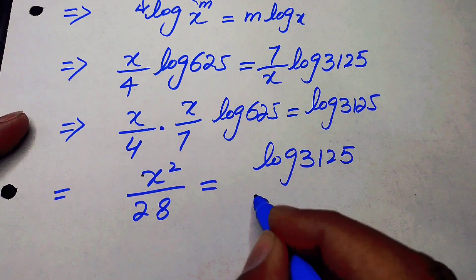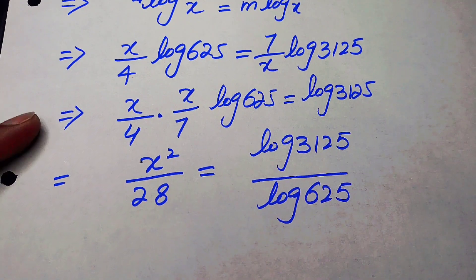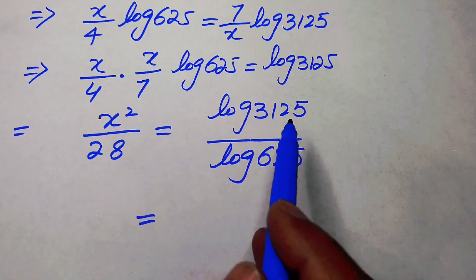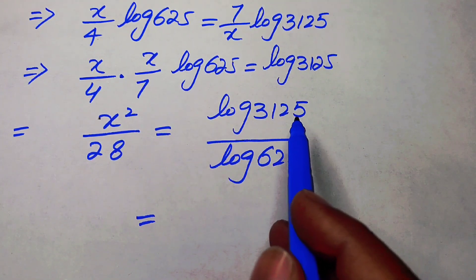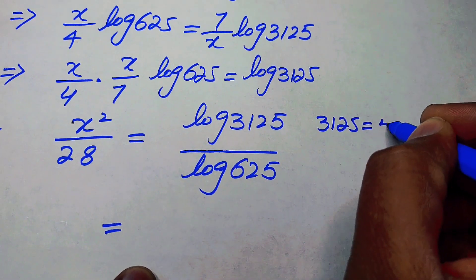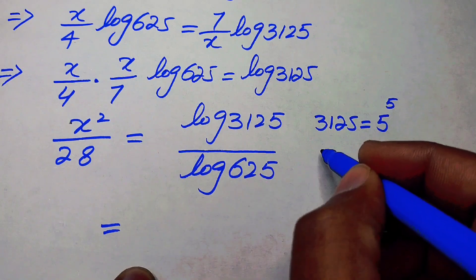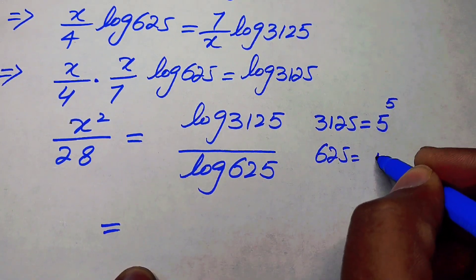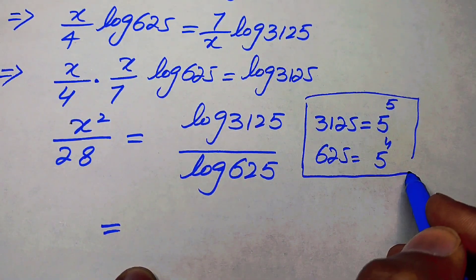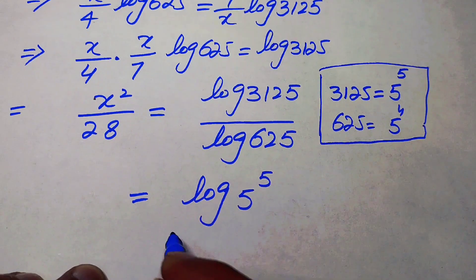We take the prime factorization: 3125 equals 5 to the power of 5, and 625 equals 5 to the power of 4. We apply these factorizations, giving us log 5 to the power of 5 over log 5 to the power of 4.